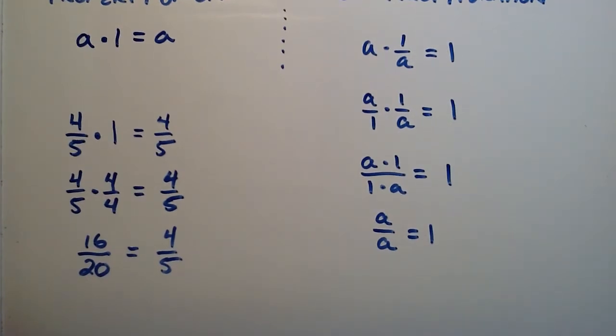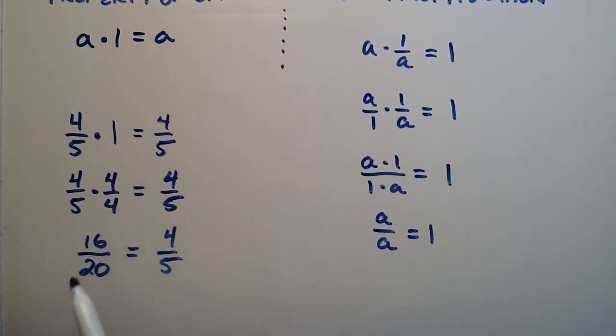And so from these two properties, we were basically able to take a fraction and show that 16 over 20 is equal to 4 fifths. And we did this by manipulating the multiplication property of 1 and the inverse property of multiplication.